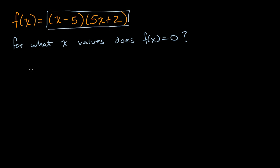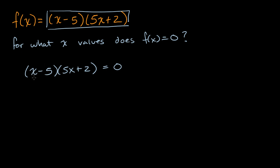It sets up just like the equation we just saw: x minus five times five x plus two — when does that equal zero? Just like we saw before, there are two situations where this could happen: either the first expression equals zero, or the second expression equals zero, or maybe both. So we could say either x minus five is equal to zero, or five x plus two is equal to zero.